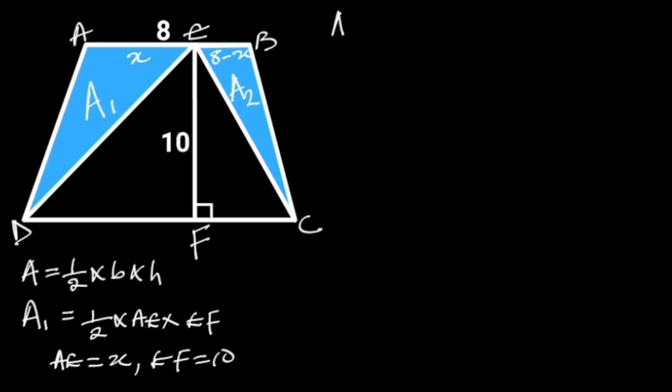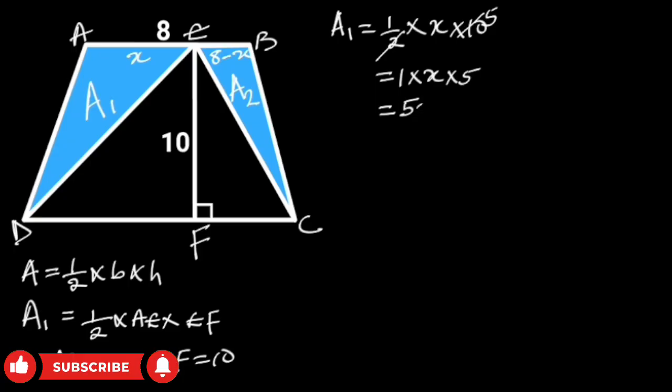If we plug in these values in the formula, we will have 1 over 2 times X times 10. 10 divided by 2 is 5, and we are left with 1 times X times 5, which is equal to 5X square units.